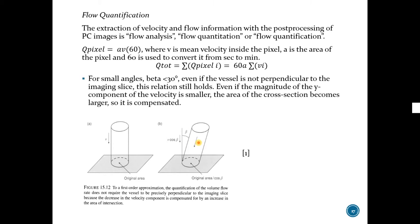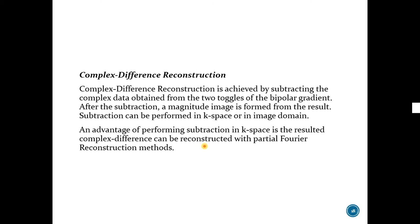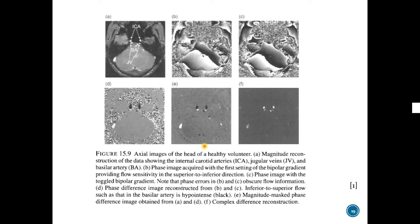Complex difference reconstruction is achieved by subtracting the complex data obtained from the two toggles of the bipolar gradient. After the subtraction, a magnitude image is formed from the result. Subtraction can be performed in k-space or in image domain. But by performing in k-space, it can be possible to reconstruct with partial Fourier reconstruction method. Here you can see phase difference image that I mentioned. And it was obtained from B and C. And F is a complex difference reconstruction. The images are pretty different.